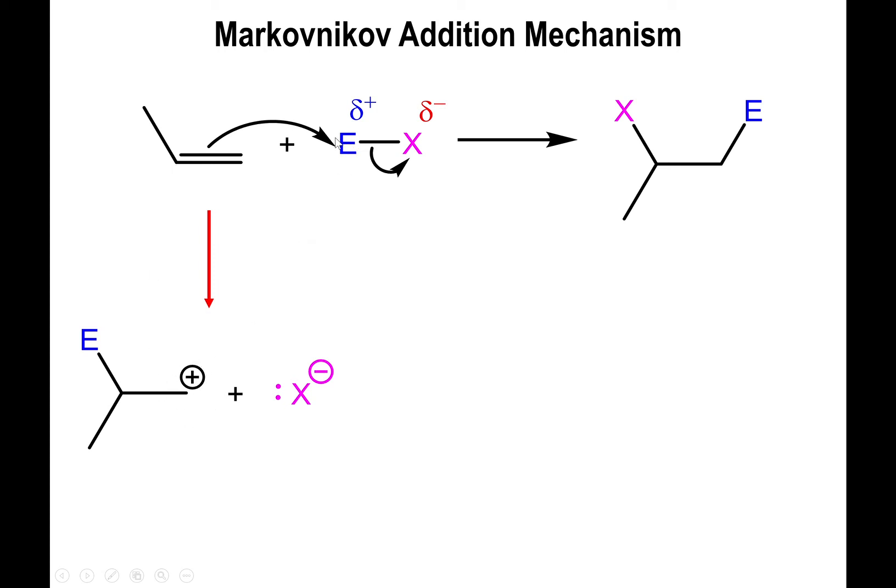So notice that if E attaches to the carbon that had the least amount of Hs, we end up forming a carbocation over here, which happens to be a primary carbocation. And generally speaking, that's not a good situation. But if the least electronegative element instead binds to the carbon with the most Hs, well, what that means is that you will bind to this carbon, so the carbon on the left side will be the electron deficient carbon,